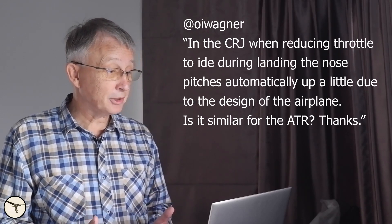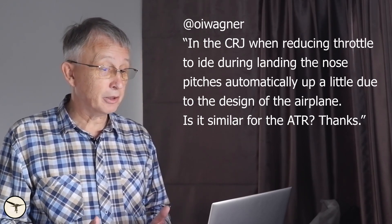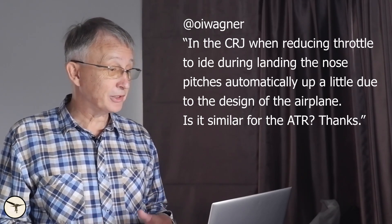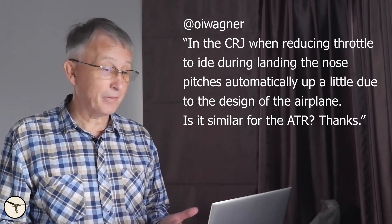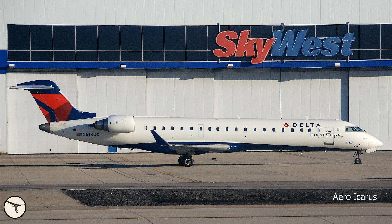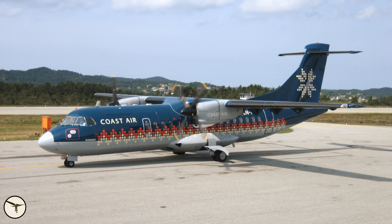Question 2: In the CRJ, when reducing throttle to idle during landing, the nose pitches automatically up a little due to the design of the airplane. Is it similar in the ATR? No, it's not. The CRJ has engines mounted quite high up, so when you reduce power there will be a force pitching the nose slightly up. Conversely, when you increase power it will force the nose a little down. On the ATR, the propeller slipstream produces a lot of lift, so when we reduce power in the flare, this lift starts to disappear, meaning the aircraft starts to lose altitude and you have to compensate by pulling — not much, but you have to compensate.